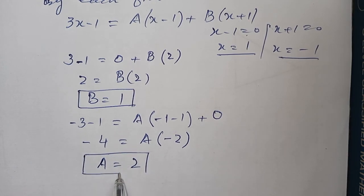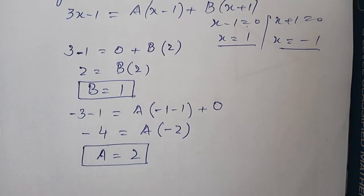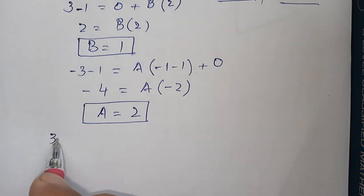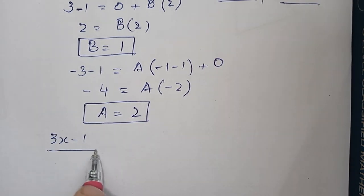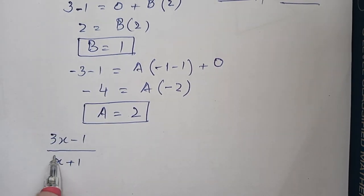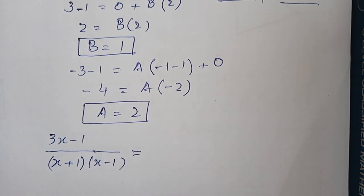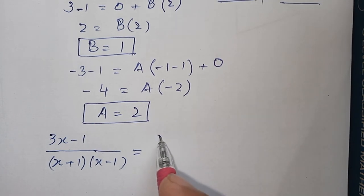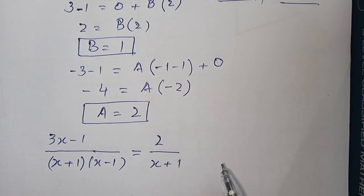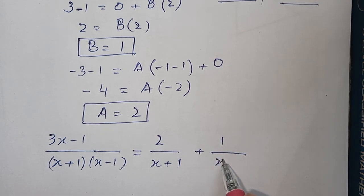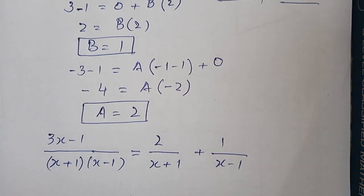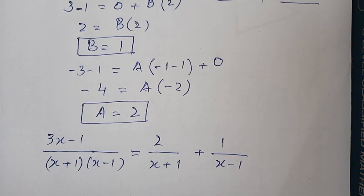इसको कर दें box. अभी आप लिखेंगे इसका answer: (3x-1) upon (x+1) into (x-1) is equal to, A का answer है मेरे पास 2, तो आप इसको लिखेंगे 2 upon (x+1), B का value 1 है तो plus 1 upon (x-1). यह partial fraction में हमने इसको convert कर दिया.